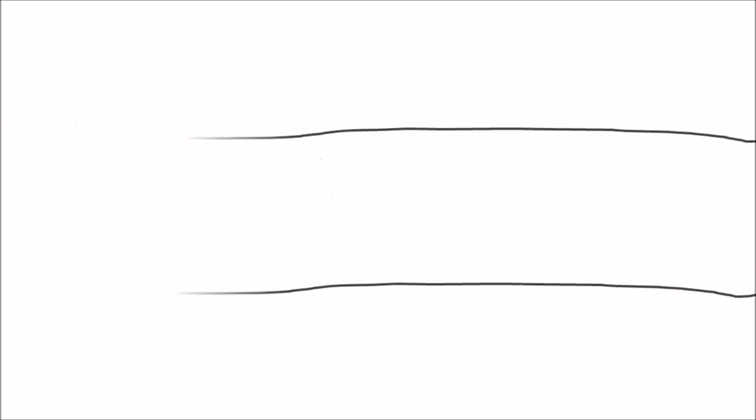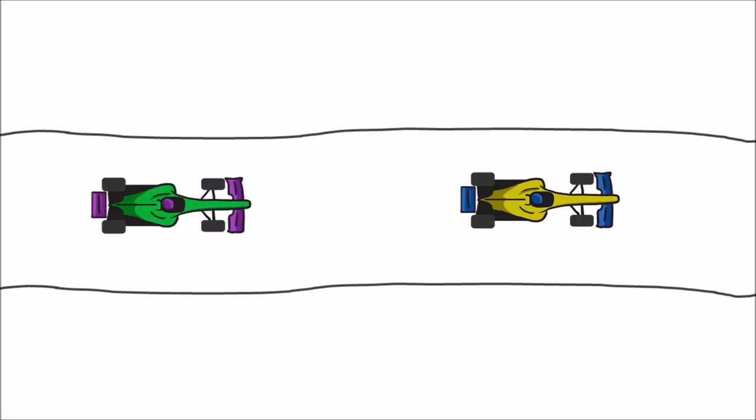So what about dirty air then? What is the supposed downside to following closely to the car in front? Well, dirty air is the flip side of the aerodynamic coin. Just as slipstreaming negated a lot of the drag suffered from travelling in fast-moving air, dirty air comes into play in the corners. It ruins a lot of the downforce effect that the aerodynamics are trying to capture.